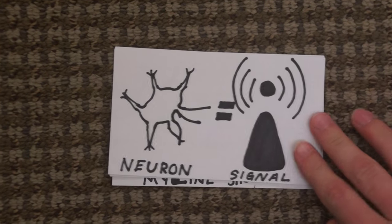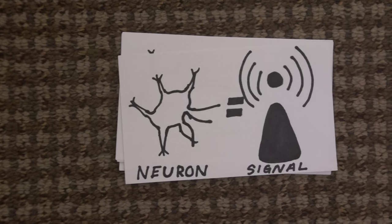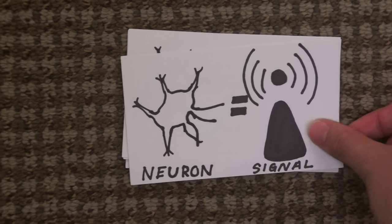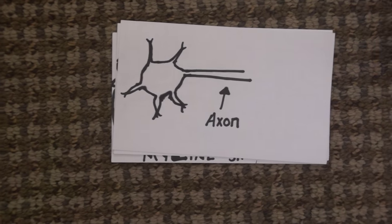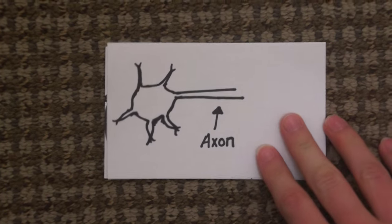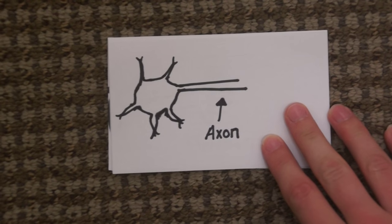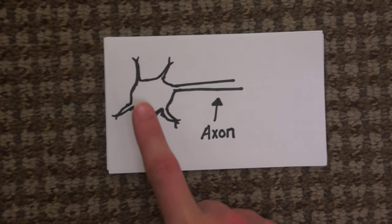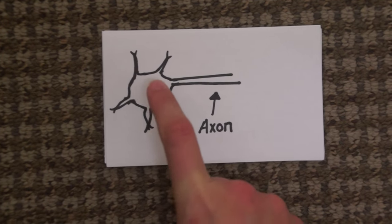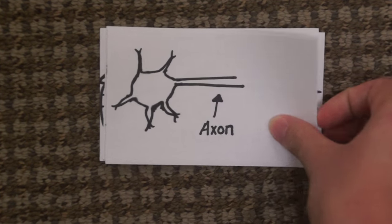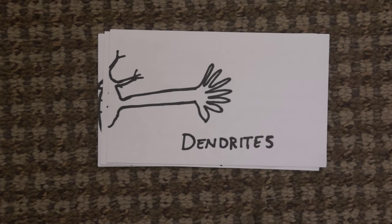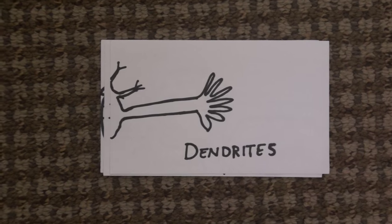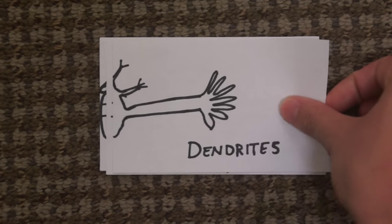What these neurons do is they act as a signal and they connect signals inside the brain, which allows a human to think. The way that the neuron passes on the signal is after it lights up, it sends the signal through the axon, which acts like a wire, into dendrites. Dendrites are the receivers and senders of the signal.